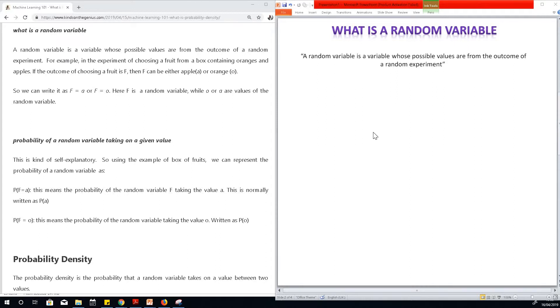For instance, if you have a box of fruits containing apples and oranges, what is the probability that if somebody takes a fruit randomly from this red box, it will be an apple or an orange?